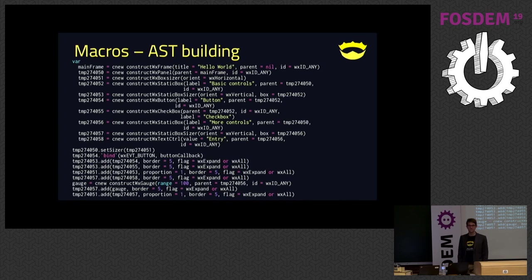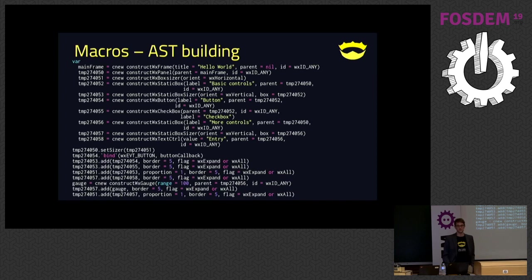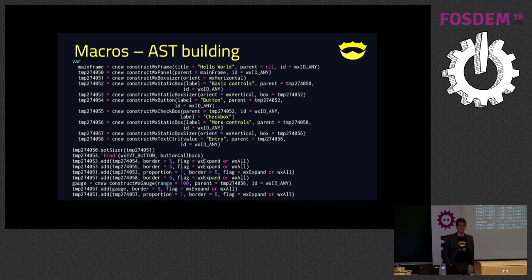Question: How good is debuggability — to write macros you need to figure out what goes wrong? When you're writing the macro yourself, it's very easy to output what the output of the macro is — you can see the code. Also, the debugging tools in NIM will tell you this comes from inside this macro, and this is the part of the macro that generated the failing line of code. So it's actually surprisingly good.